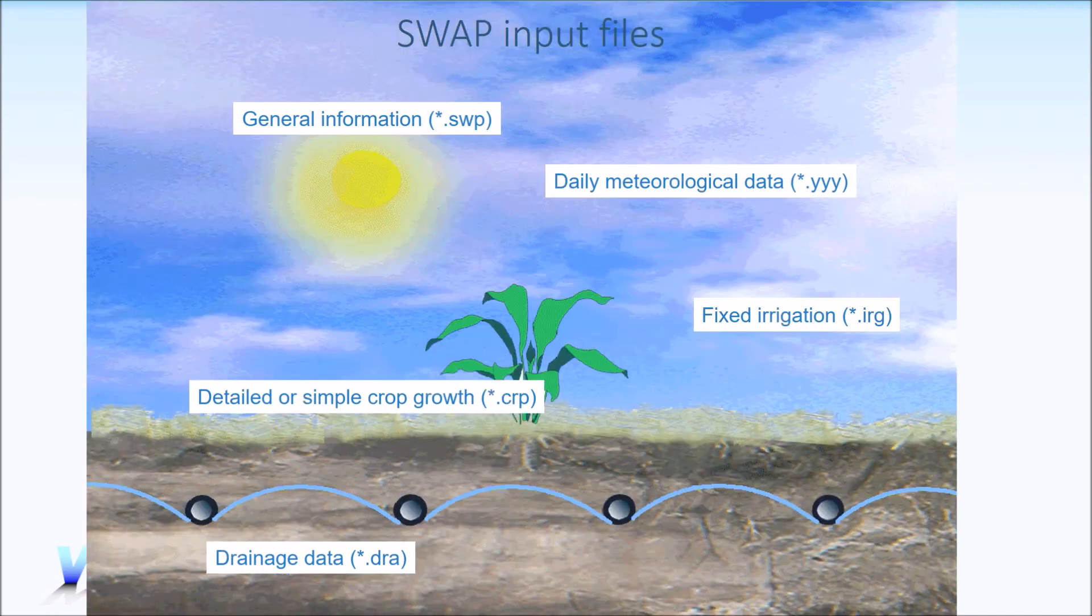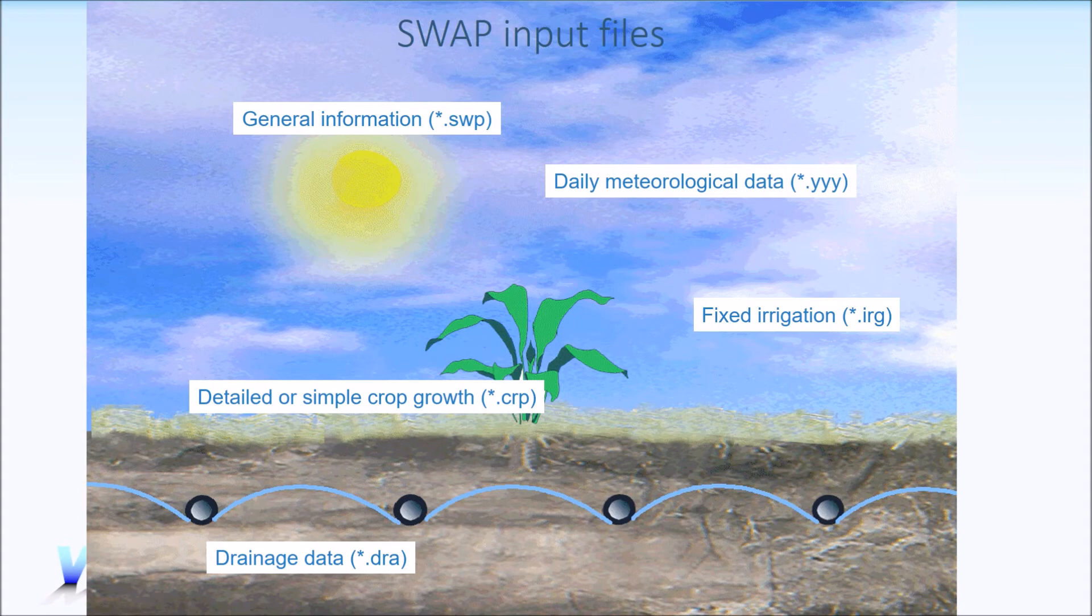In summary, which data do you need to run the SWAP model? There is a basic but important file, SWP. You need meteorological data, irrigation data, SWAP channel, the daily or simple crop growth with phenological data, the root water uptake and the root depth growth, and also optional drainage data.